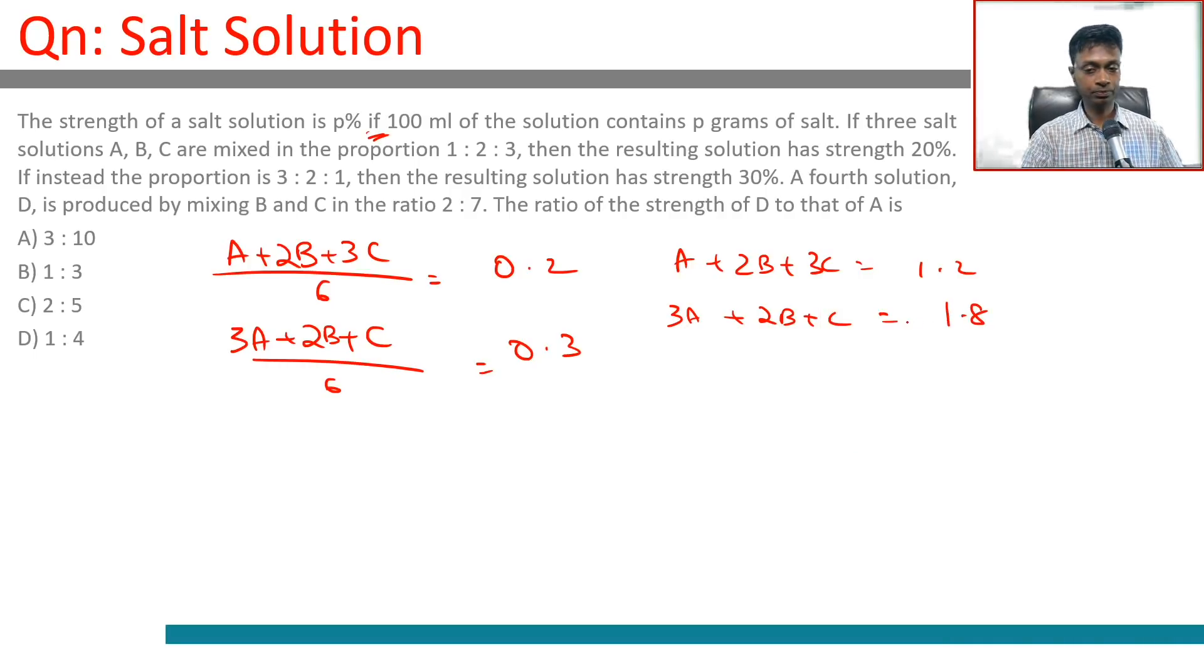Wonderful, with this we can get some equations in A, B, and C and start manipulating. What is the question asking us? It says a fourth solution D is produced by mixing B and C in the ratio 2:7.